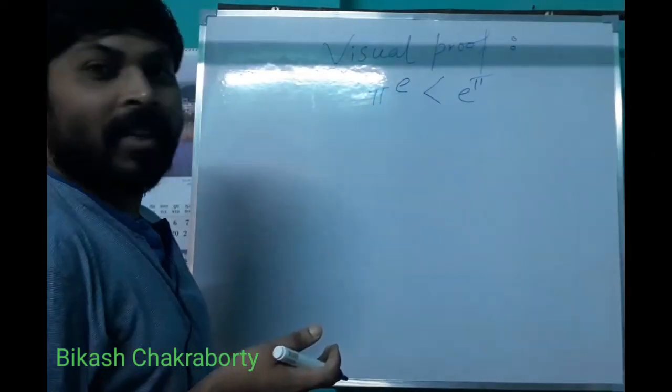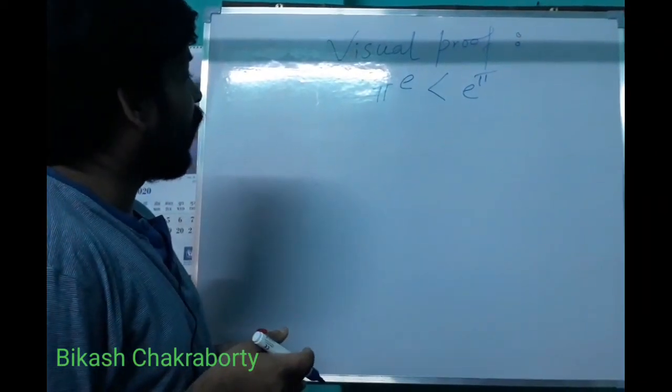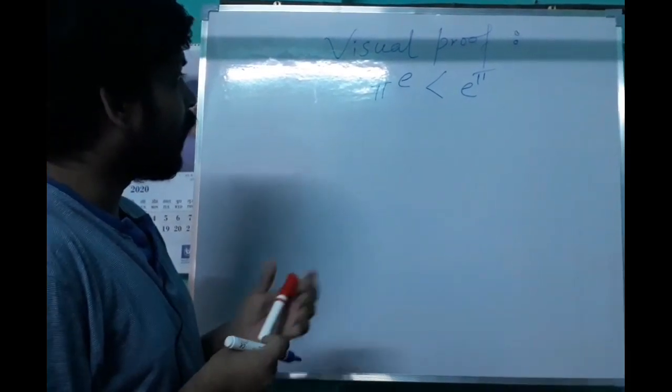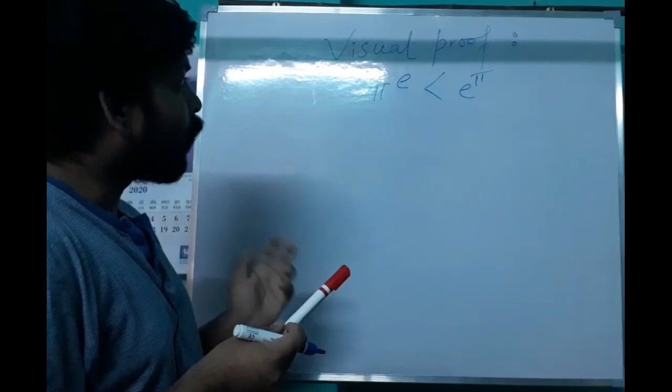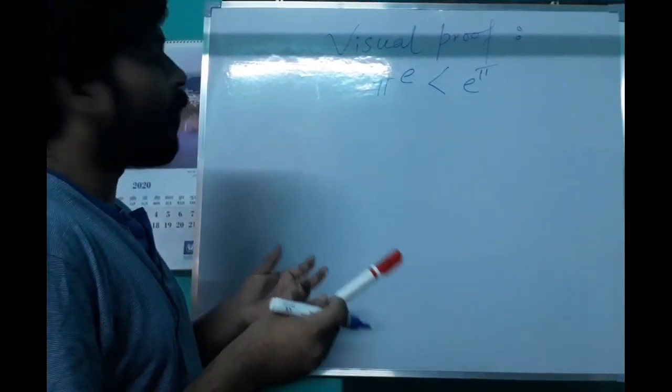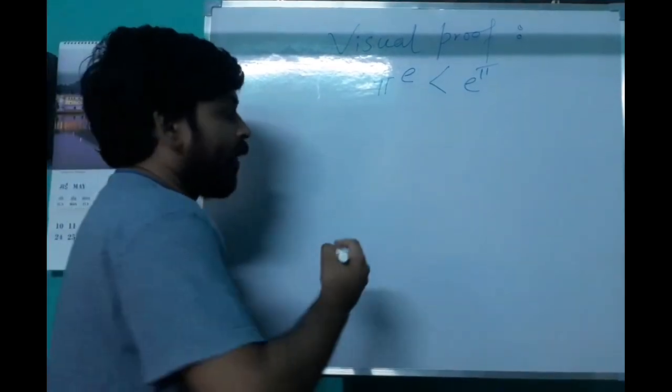Today we are going to discuss a visual proof that pi to the power e is strictly less than e to the power of pi. The proof is totally visual. Okay, let's start.